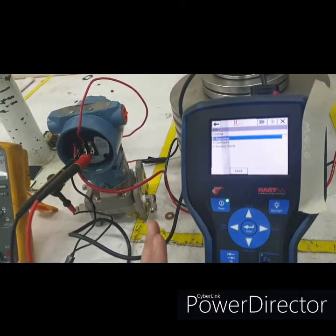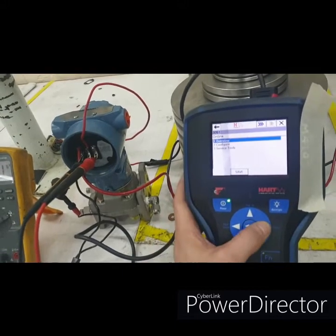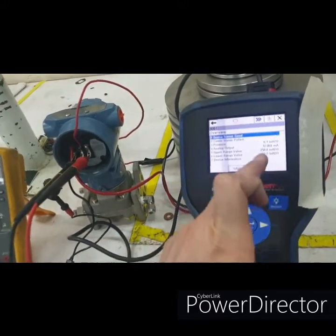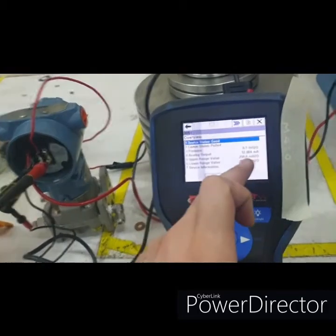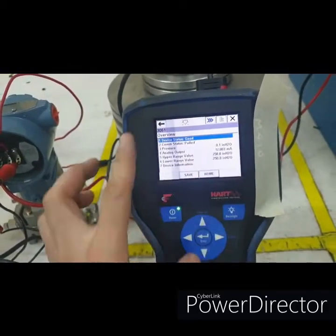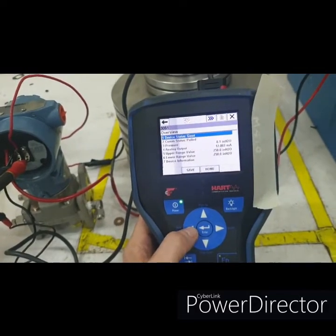Since the default unit is in inches H2O and the upper range and lower range is in default values, we need to change that. So we'll go back to the main menu and go to configure.